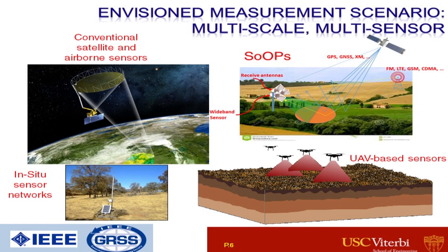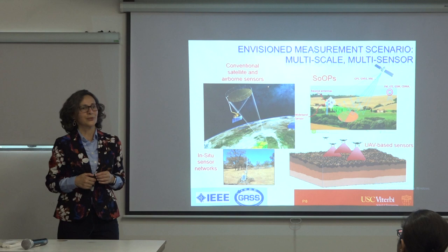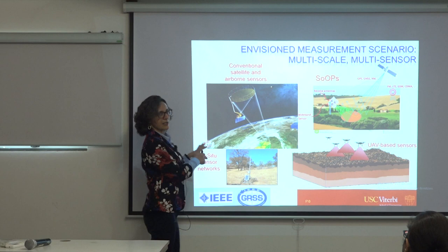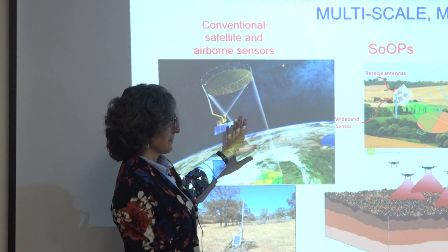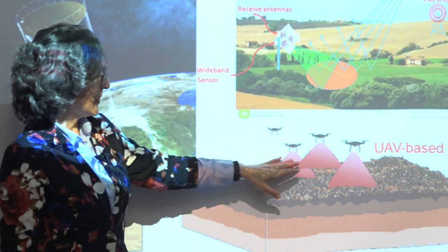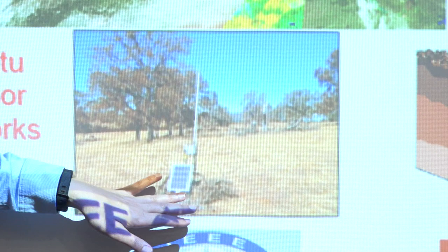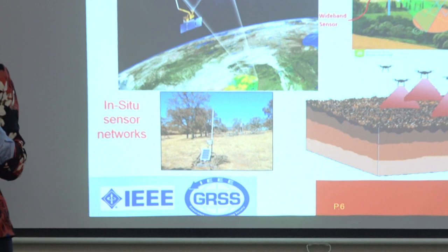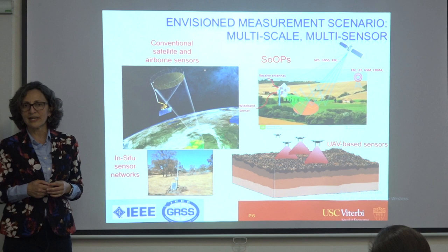The operational scenario I envision for the next couple of decades includes the traditional high-capability active and passive remote sensing devices, signals-of-opportunity radars using GPS and other transmitters to observe reflected signals, networks of UAVs with smaller radars that can be deployed on demand, and in-situ sensors providing ground truth data. My belief is that we need all of this as some kind of integrated observational scenario to address the water puzzle and environmental characterization more broadly.